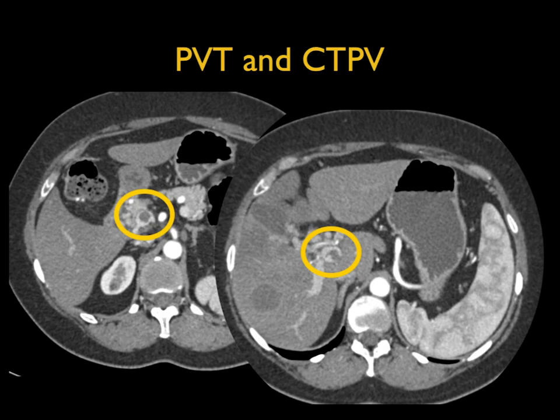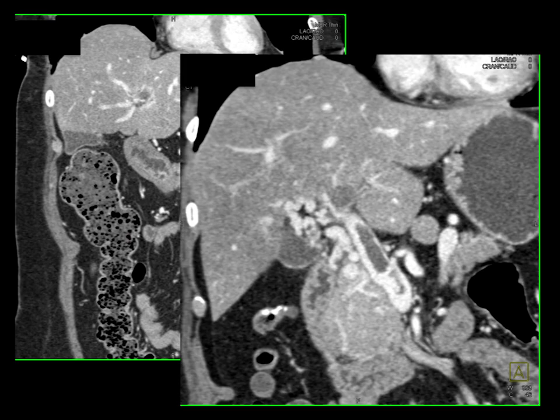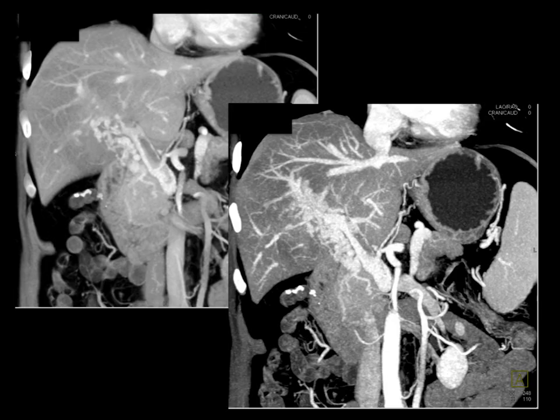Here's another case showing thrombus that is not occlusive in the portal vein, but with multiple collaterals present — the so-called cavernous transformation. On coronal views, you see the collaterals in the porta hepatis. You need to be careful because those collaterals can be called tumor if you don't have good enhancement. This is a very nice example of thrombus in the main portal vein, not occlusive, with cavernous transformation nicely demonstrated.